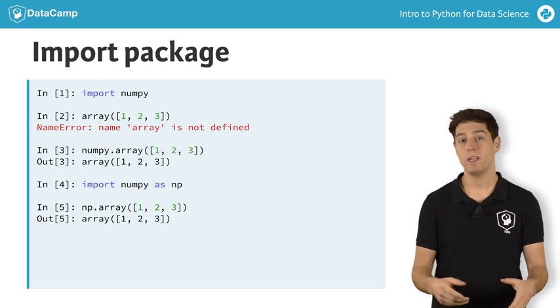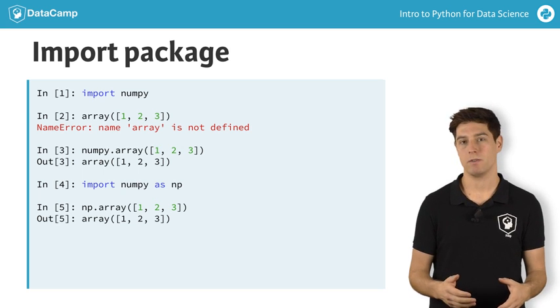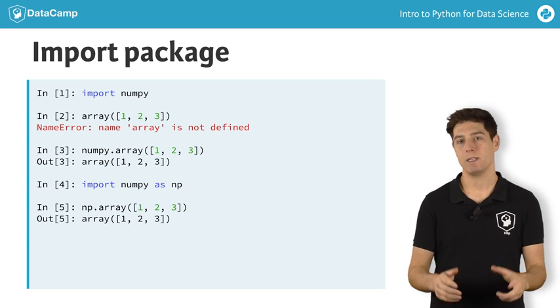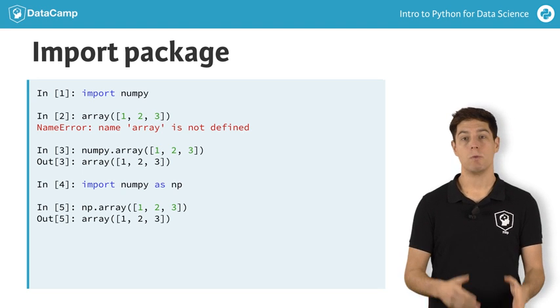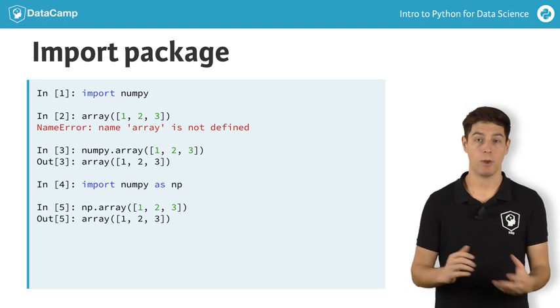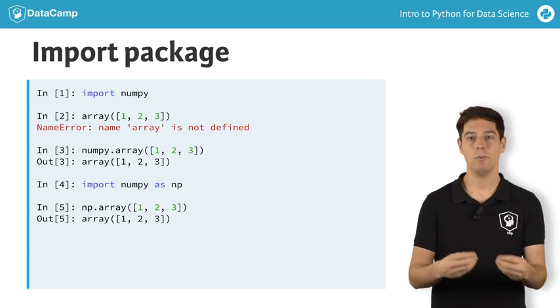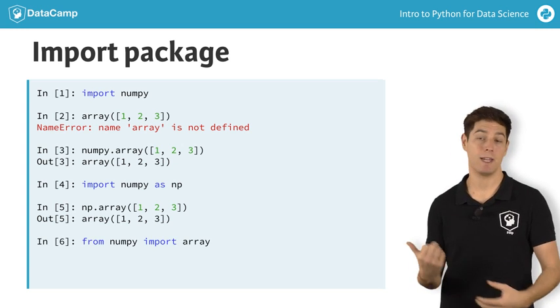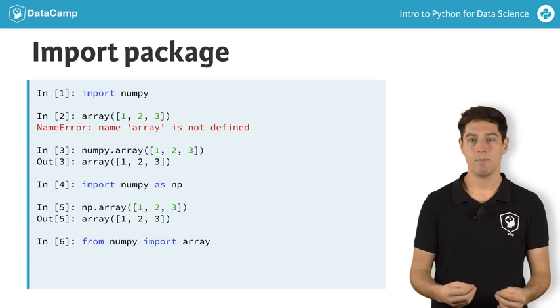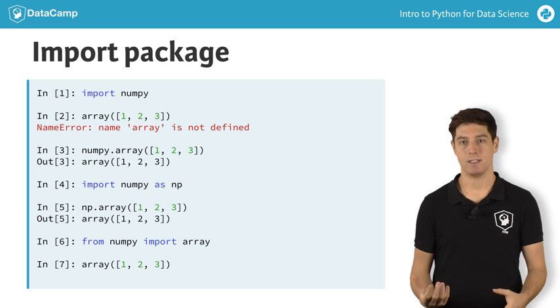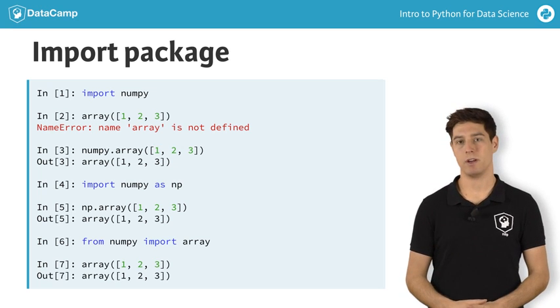There are cases in which you only need one specific function of a package. Python allows you to make this explicit in your code. Suppose that we only want to use the array function from the numpy package. Instead of doing import numpy, you can instead do from numpy import array, like this. This time you can simply call the array function like this. No need to use numpy dot here.